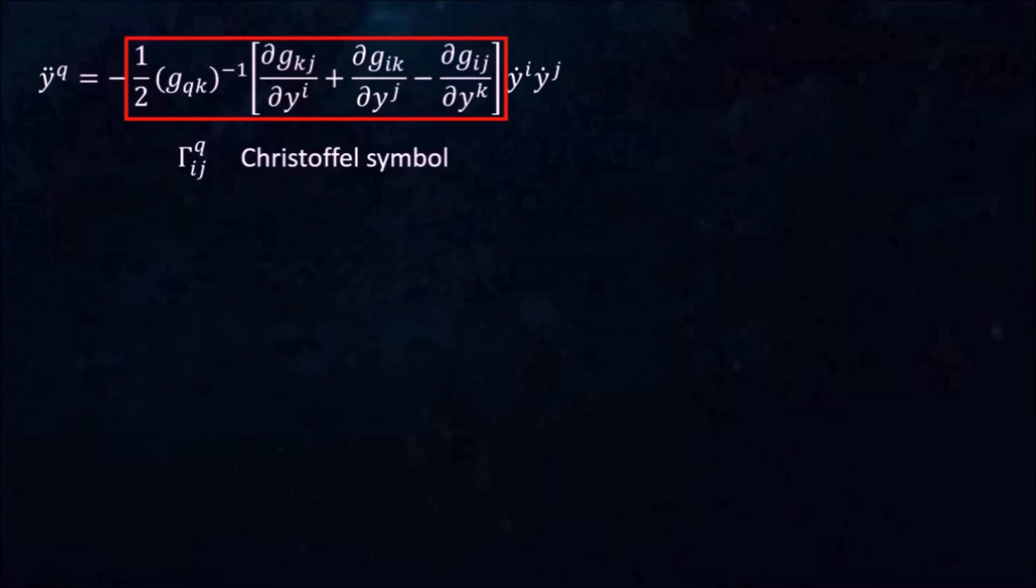We recognize this part as the Christoffel symbol and may write the equation in a more compact form. We can simplify it further by defining a new function u as the derivative of x with respect to s. Finally, we end up with a first-order nonlinear differential equation for every component q. This is called the geodesic equation.